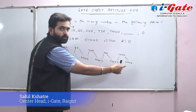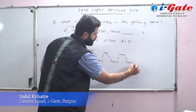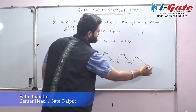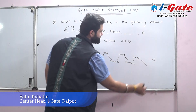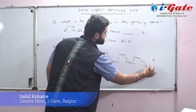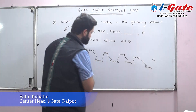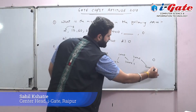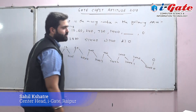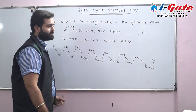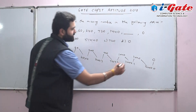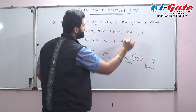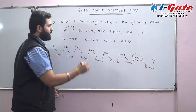Continuing the pattern, the next multiplier is 1, giving 1440. Then 1440 × 0 = 0, which is the last term given. So the missing term is 1440. The answer is option B.